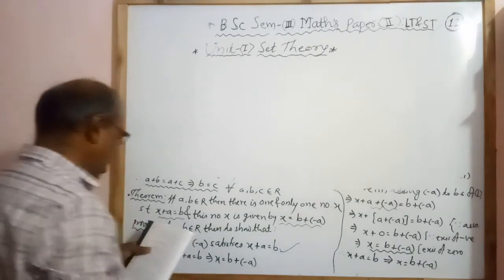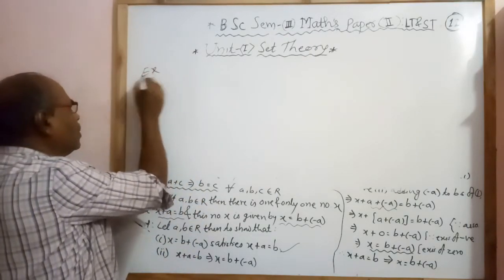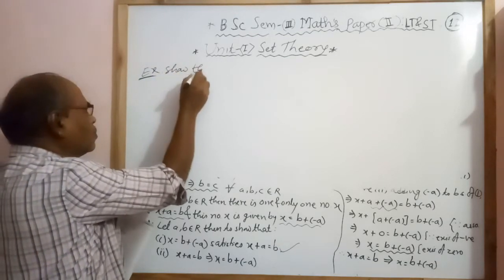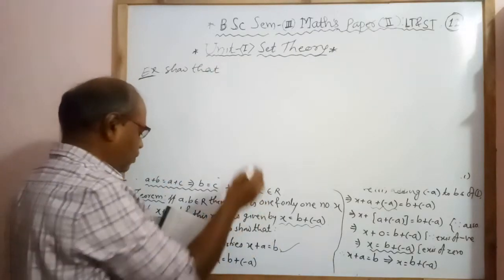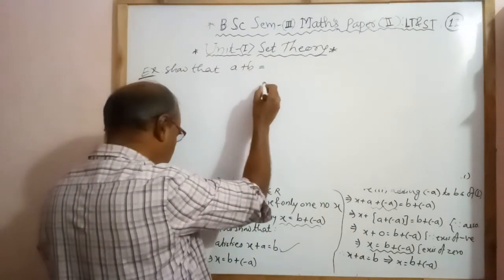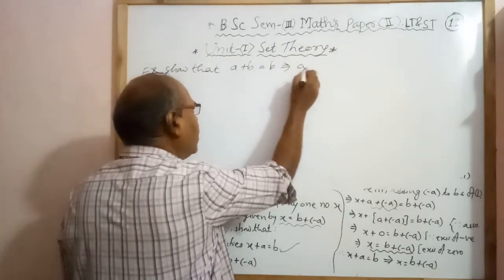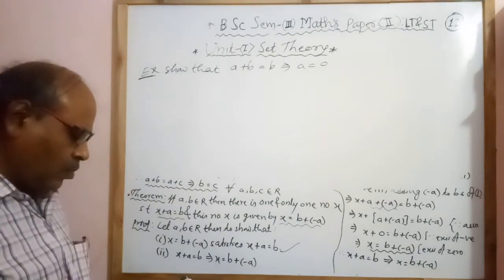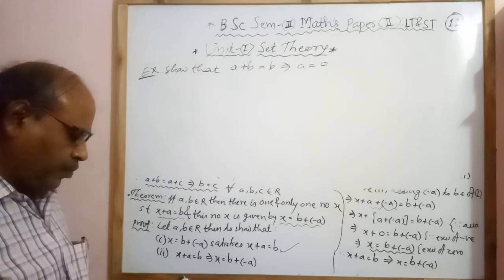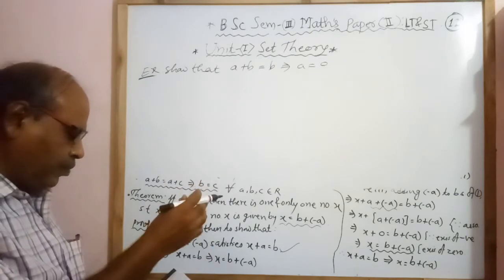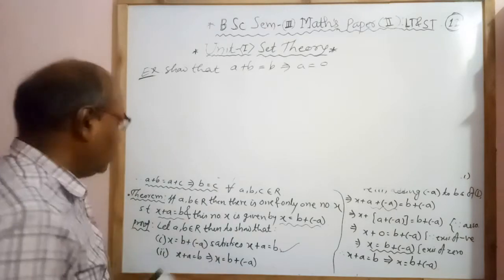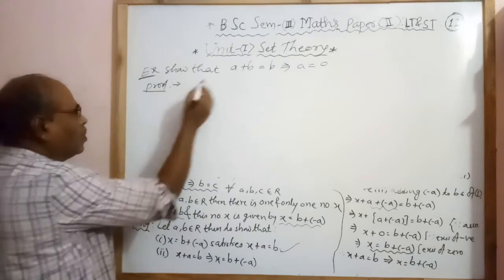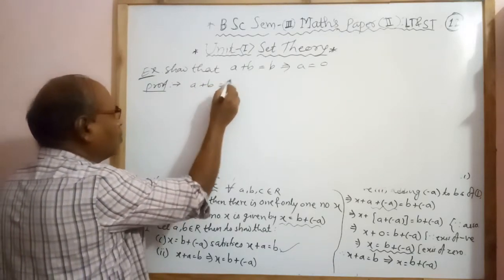Now I will take an example. Show that A plus B equal to B implies A equal to 0. By the cancellation law, consider the given part: A plus B equal to B.